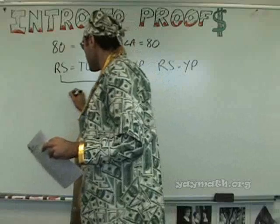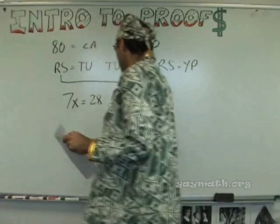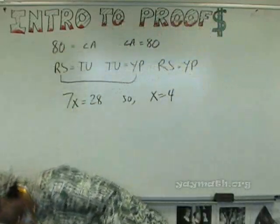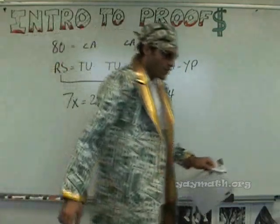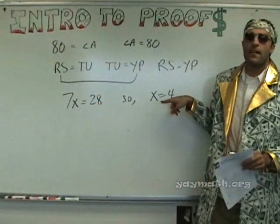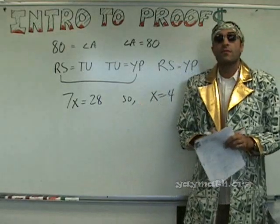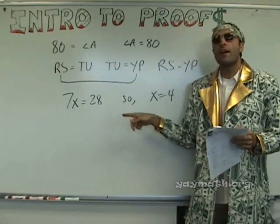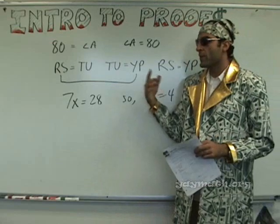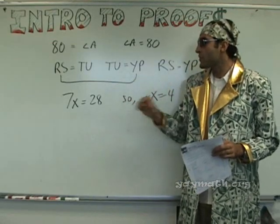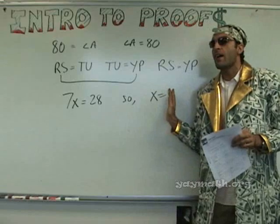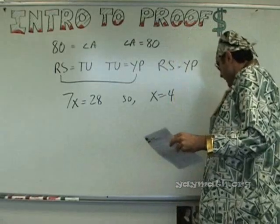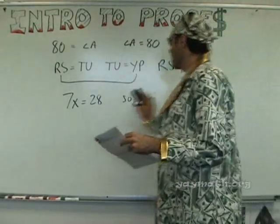Next one: 7X equals 28, so X equals 4. Here's the question about proofs — what changed from this statement to this statement? What did we do algebraically? We solved it by isolating X. By dividing both sides. So this will be the division property. The way you want to start thinking about proofs is: what did I do to get from here to here? I divided both sides by 7. So this is called the division property.